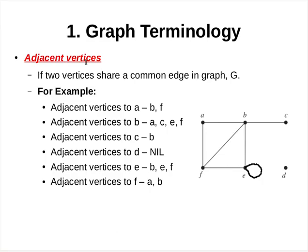Adjacent vertices: Two vertices A and B are said to be adjacent if they share a common edge in graph G. This edge is said to connect the vertices A and B. In the following graph, the adjacent vertices to vertex A are B as well as F.